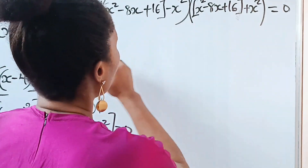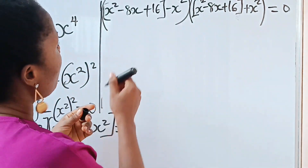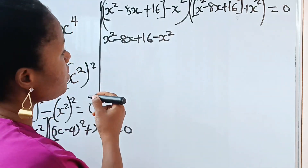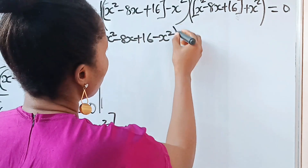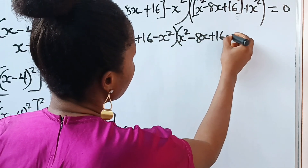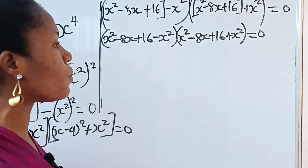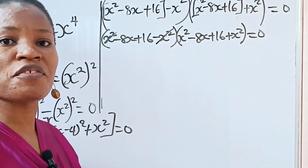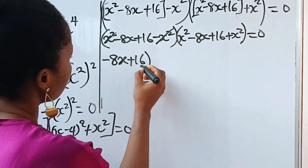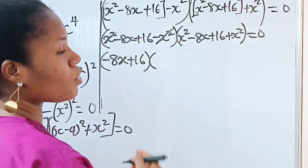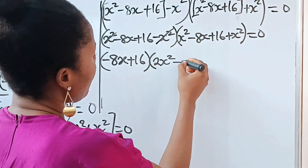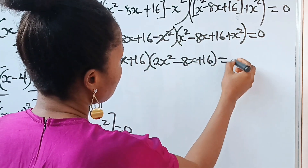Permit me to come to this side of the board. We have x squared minus 8x plus 16 minus x squared, multiplied by x squared minus 8x plus 16 plus x squared, is equal to 0. Now x squared minus x squared gives us 0, so the first bracket becomes minus 8x plus 16. In the second bracket, x squared plus x squared gives us 2x squared, so we have 2x squared minus 8x plus 16.